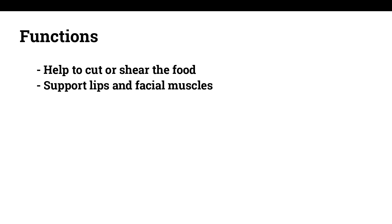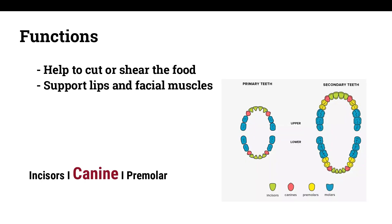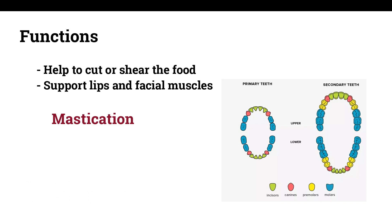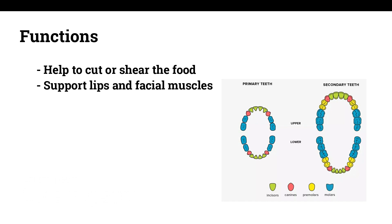Functions of Canine: The location of the canines reflects their dual function, as they complement both the premolars and incisors during mastication, commonly known as chewing. The most common action of the canines is tearing of food. Canines also function with the incisors to support the lips and facial muscles, and have significant importance in facial expression.